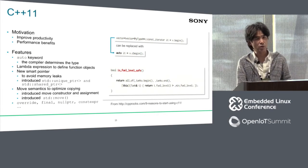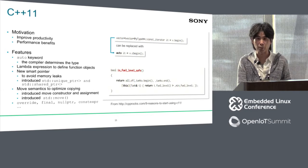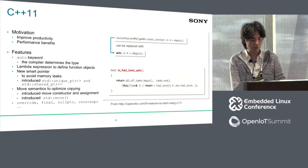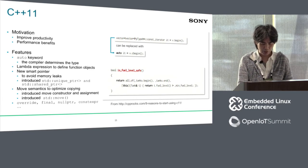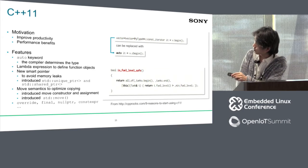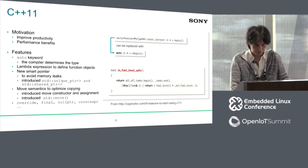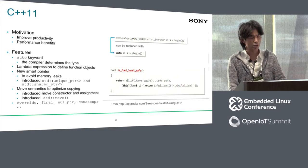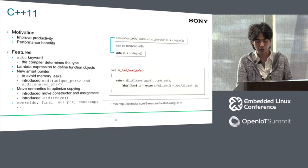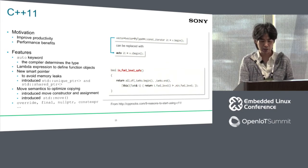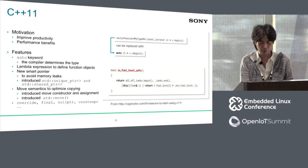Let's move on to our C++11 usage. In this project we decided to use C++11 for middleware and application development to improve productivity as well as performance. Key features include the auto keyword, where the compiler determines each type — the first line in the chart can be replaced with the simpler second line. We can also use lambda expressions to define function objects. Smart pointers, which are implemented in standard libraries, can be used to avoid memory leaks. We can use move semantics to improve performance, and other C++11 keywords are also useful to improve productivity.